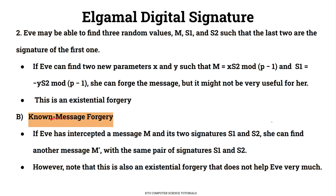This is the non-message forgery scenario, where M is intercepted and two signatures are passed. That covers all of ElGamal Digital Signature.